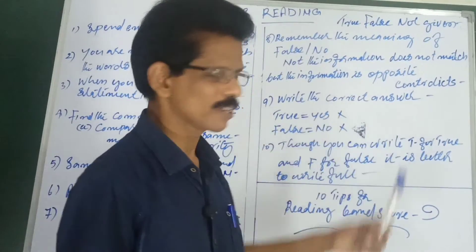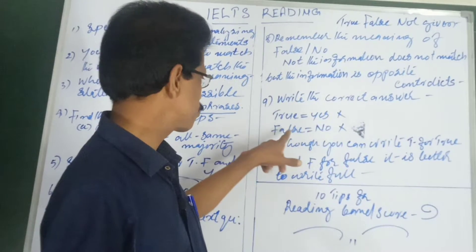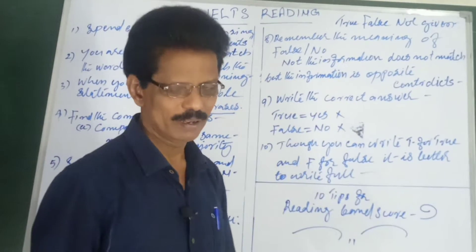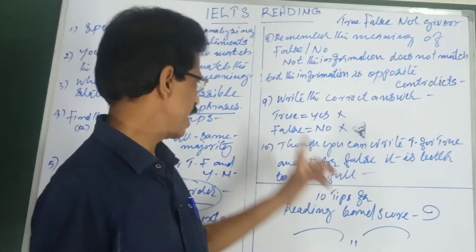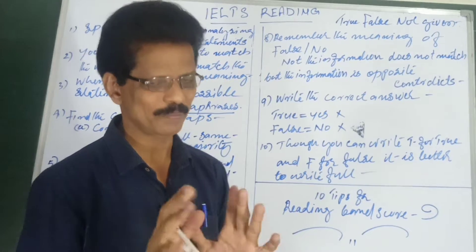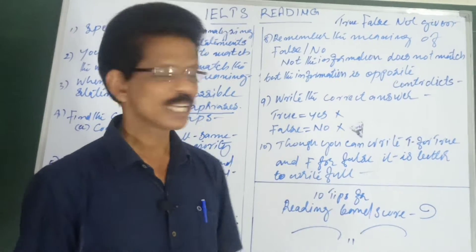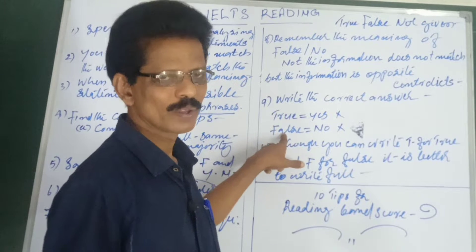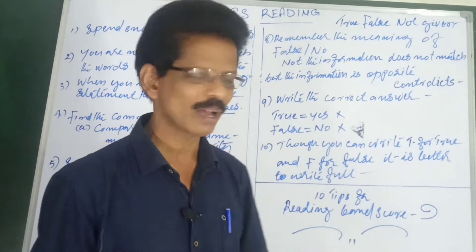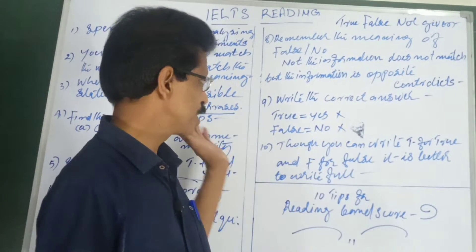Tip number nine: write the correct answer format. If the question asks for True/False, write 'True' or 'False' — do not write 'Yes' or 'No' instead. If it asks for Yes/No, write 'Yes' or 'No' — not 'True' or 'False.' Writing the wrong format means the mark will not be given. True/False relates to factual information; Yes/No relates to the writer's opinion.